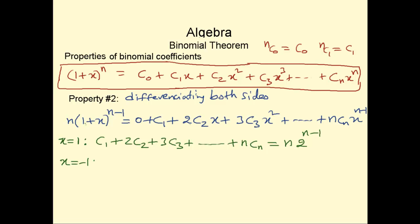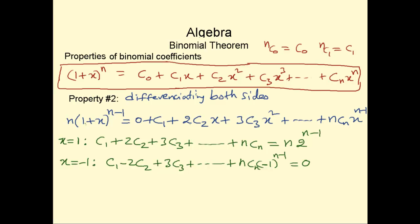Now let's put x = -1 on the right-hand side. You get C1 + 2·(-1)·C2, which is -2C2, and then (-1)² = 1, so plus 3C3, and so on. The last term gives n·Cn·(-1)^(n-1). On the left-hand side, 1 + (-1) = 0, so 0^(n-1) is 0, and n times 0 is 0. So the left-hand side gives 0.